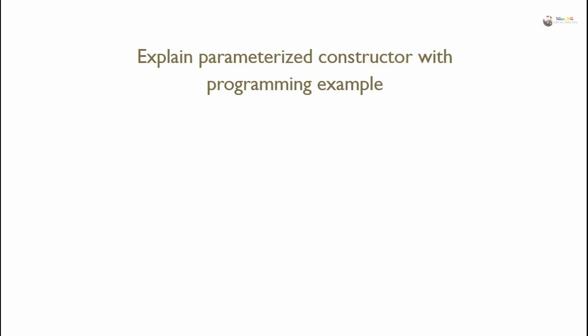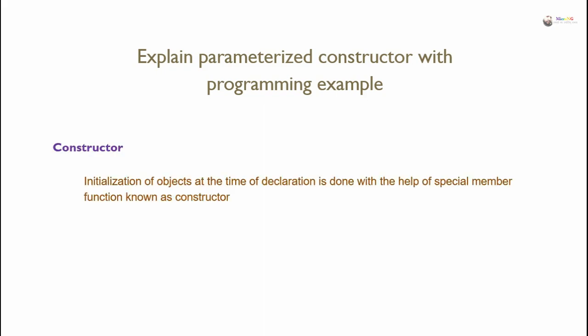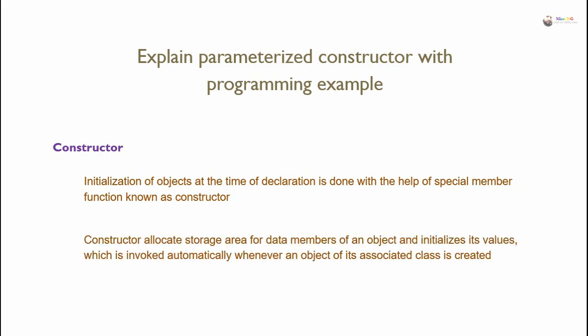Explain parameterized constructor with programming example. Initialization of objects at the time of declaration is done with the help of a special member function known as a constructor. A constructor allocates storage area for data members of an object and initializes its values, and is invoked automatically whenever an object of its associated class is created.